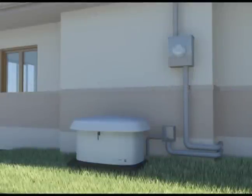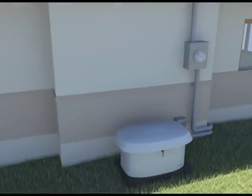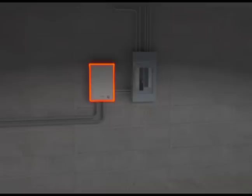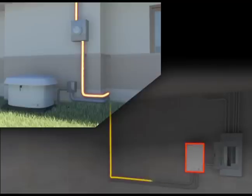A Cummins Onan home standby system consists of two main components: the generator located outside the home and the transfer switch, usually located inside the home by the electrical distribution panel. The transfer switch constantly monitors incoming voltage from utility power.